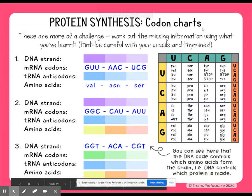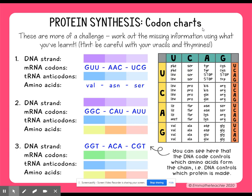We're working more with our codon chart, going backwards from messenger RNA and then forwards from DNA, in different combinations so you get more comfortable. These are more of a challenge — work out the missing information using what you've learned. Hint: be careful with your uracils and your thymines.